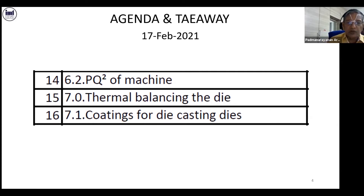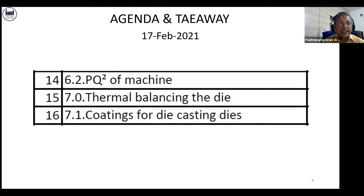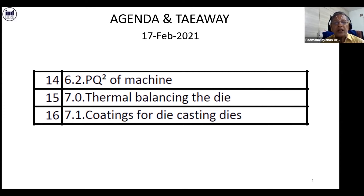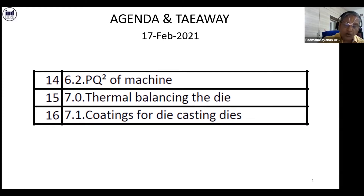It is very important to understand the thermal balancing of the die. Then we cover coatings for die casting dies — how coatings help in the present day scenario for enhancing die life. No customer today is willing to accept a normal die life of 100,000 shots. The minimum expectation from each customer nowadays is 150,000 to 200,000 shots — that is 1.5 to 2 lakhs — and if something happens they will ask you to replace the die.